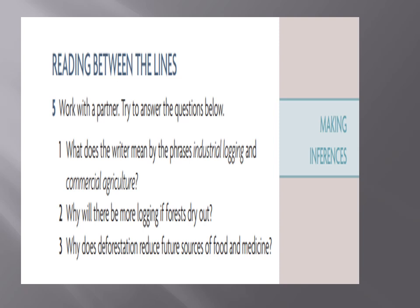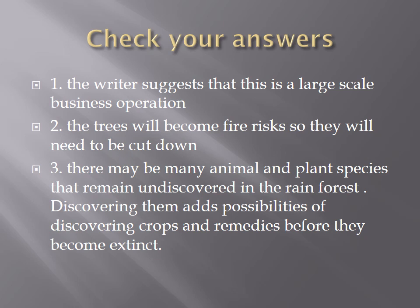Making inferences again — reading between the lines. Work with a partner and answer: What does the writer mean by 'industrial logging' and 'commercial agriculture'? Why will there be more logging as forests dry out? Why does deforestation reduce future sources of food and medicine? The writer suggests industrial logging is a large-scale business operation. As forests dry out they become fire risks, requiring more cutting. There may be many undiscovered animal and plant species in the rainforest — destroying that habitat destroys possibilities of future crops and remedies.